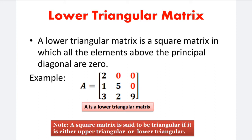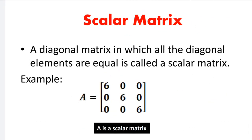A square matrix is said to be triangular if it is either upper triangular or lower triangular. One square matrix is called a triangular matrix. This includes the upper triangular and lower triangular forms. A diagonal matrix in which all the diagonal elements are equal is called a scalar matrix.